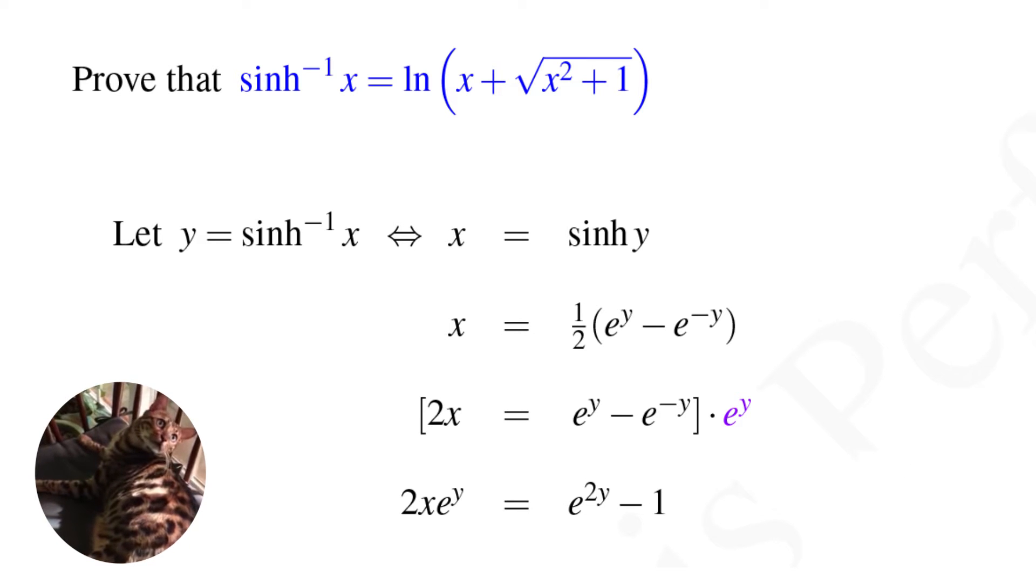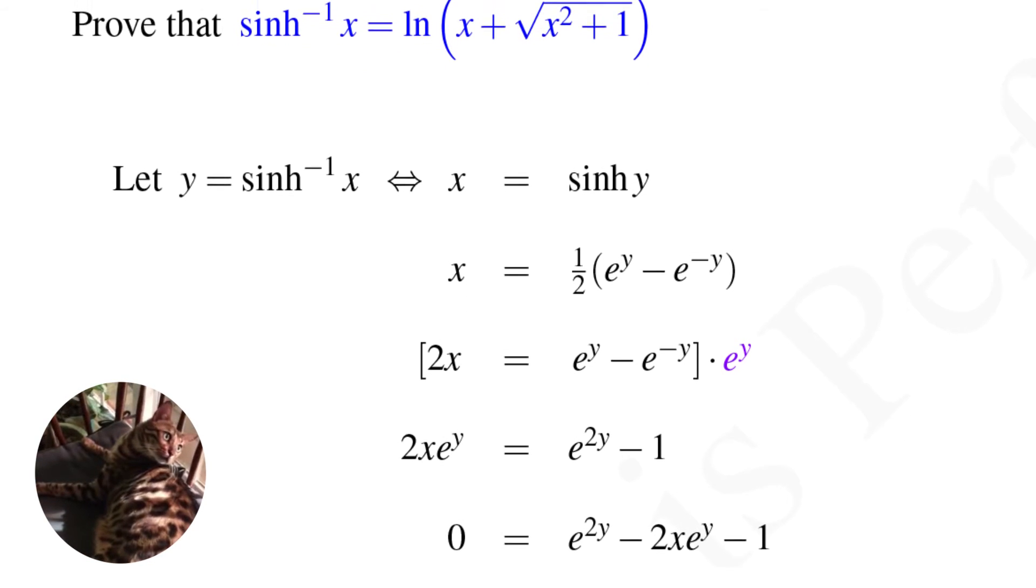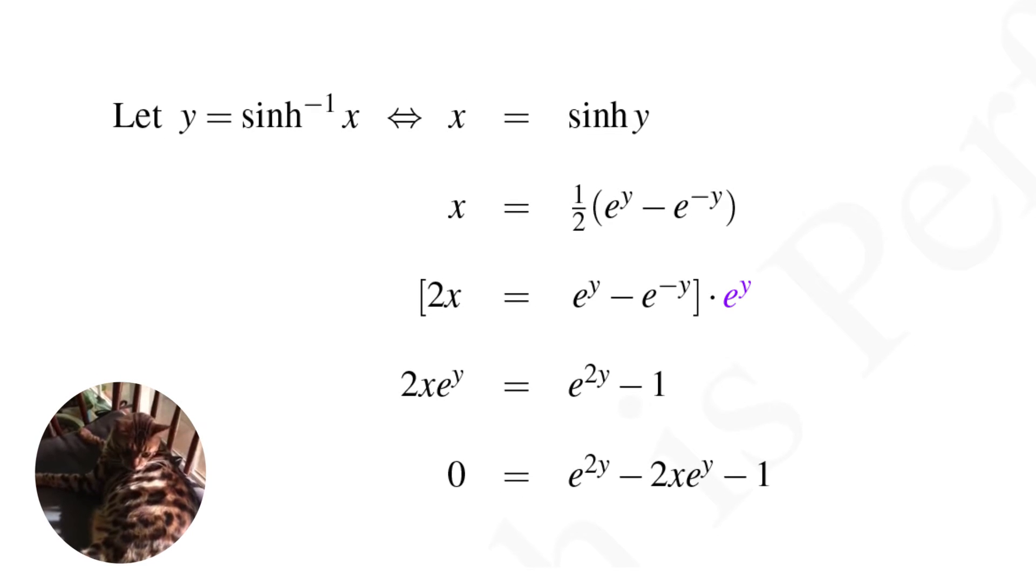This is quadratic in e to the y, so let's set it to 0. I have that 0 equals e to the 2y minus 2x e to the y minus 1.